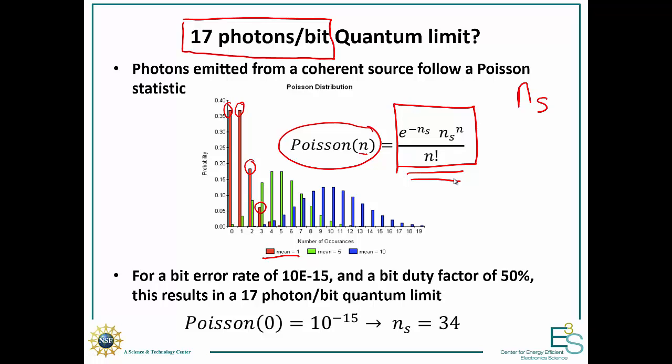Now, if the probability was, if the mean amount of photons coming out of that laser per unit time was 10, you'd be on this blue distribution here. And actually, as ns becomes very big, you approach a Gaussian distribution.